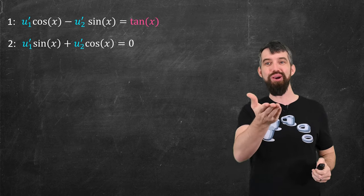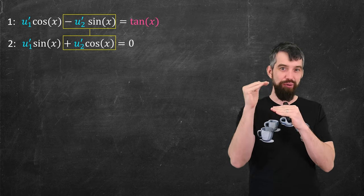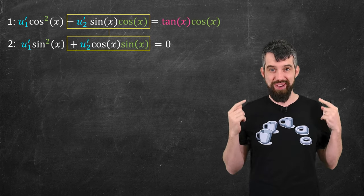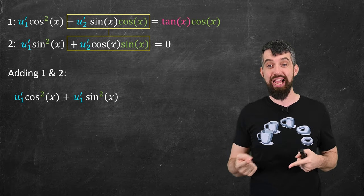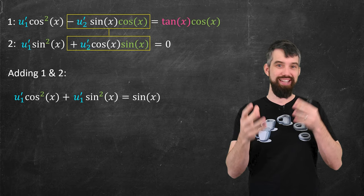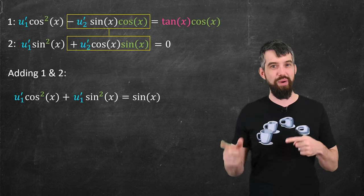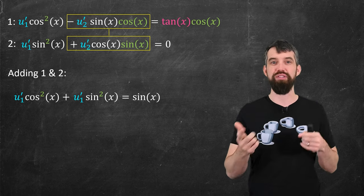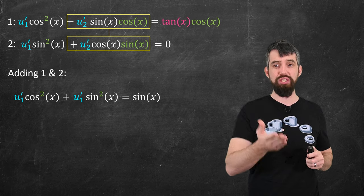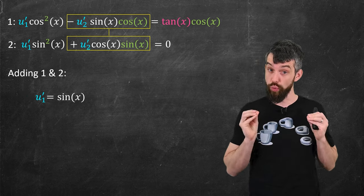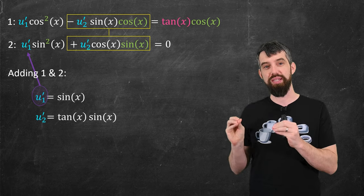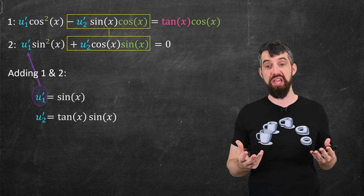I can solve this system. Both equations have a u2' term with a minus and a plus. I multiply the top equation by cosine and the bottom equation by sine, so those two terms become identical — when I add them they cancel. All that remains is u1'·cos²(x) plus u1'·sin²(x) equals tan(x)·cos(x), which simplifies to sin(x). I'll make a domain restriction to x between 0 and π to avoid domain problems. cos²+sin²=1, so u1' = sin(x). Plugging back in, u2' = tan(x)·sin(x).